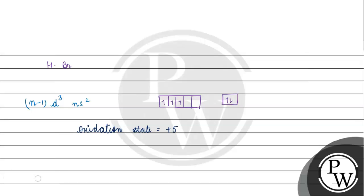Next we have Option B: (n-1)d⁵ns¹. If we look at this, we have d⁵ and ns¹. All these electrons — if we want to use the maximum oxidation state, we can use all 6 electrons, so the oxidation state we can achieve is plus 6.